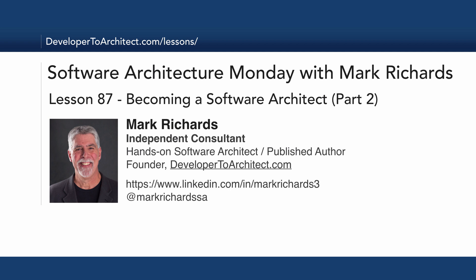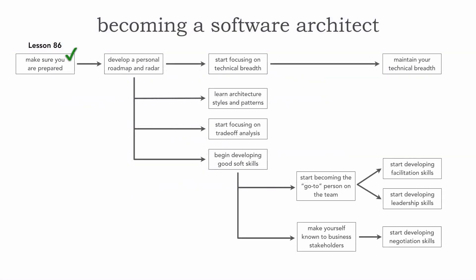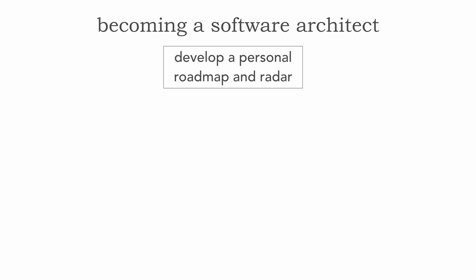We'll be taking a look at the next step in the roadmap I introduced in lesson 86. If you're just coming into this lesson and haven't seen lesson 86, please pause this and take a look at the prior lesson first, where I described this roadmap and went through making sure you're prepared. In lesson 87, we'll focus on developing a personal roadmap and radar — the next step after confirming you're prepared to become a software architect.